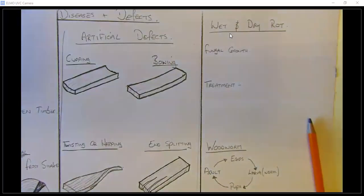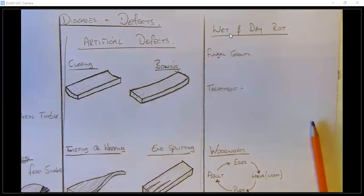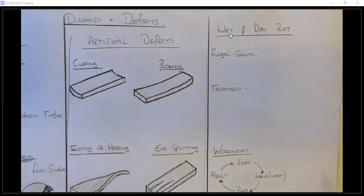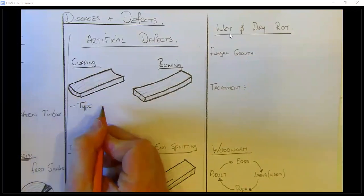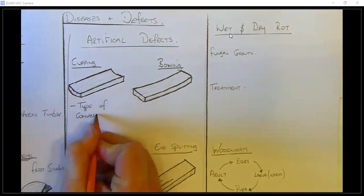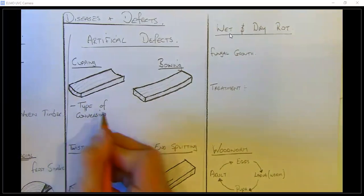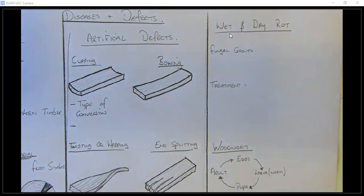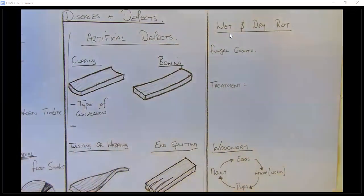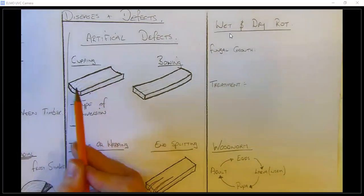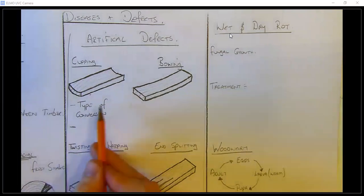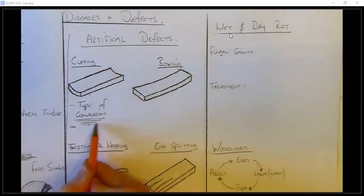Cupping is a man-made defect, not a natural defect. The reasons can be the type of conversion, and it can also come from poor stacking. When you're stacking timber and hoping to season it, it has to be flat and even. The main reason for cupping is the type of conversion — that's the really big one.